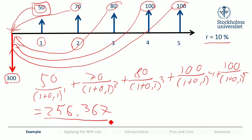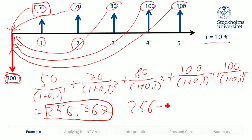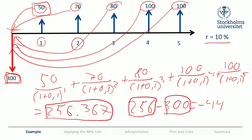So we can compare this present value of the benefits — 256.367 — to the present value of the costs, which is 300. We gain less than we have to pay, so this would be a fairly bad investment. We take 256 minus 300 to find that we would actually lose 44. This is what we call the net present value, because we net the positive and negative cash flows, and they are all in present value.